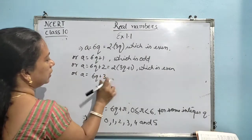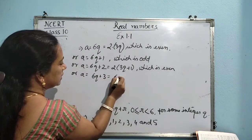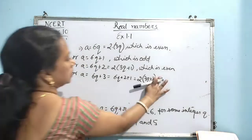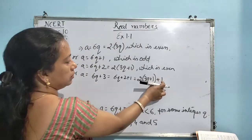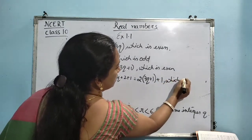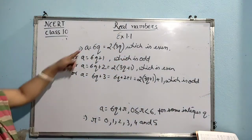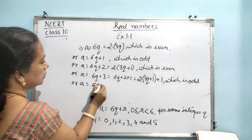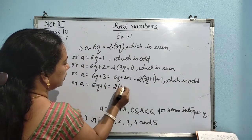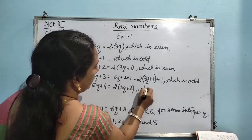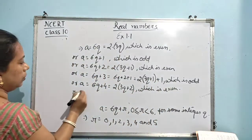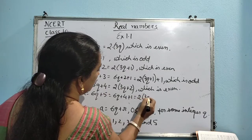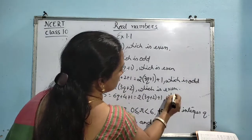To clarify further: 6Q plus 3 can be written as 6Q plus 2 plus 1, then taking 2 common gives 2 into 3Q plus 1, plus 1 — so one even plus 1 means it is an odd number. 6Q plus 4 is even — taking 2 common gives 3Q plus 2, which is even. And 6Q plus 5 can be written as 6Q plus 4 plus 1, giving 2 into 3Q plus 2 plus 1 — again some even plus 1, which is odd.